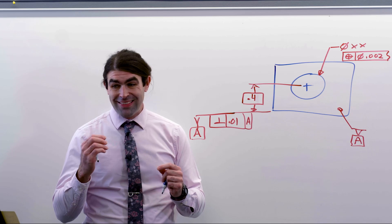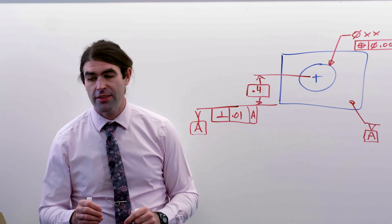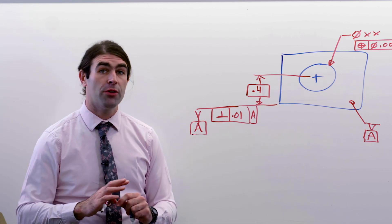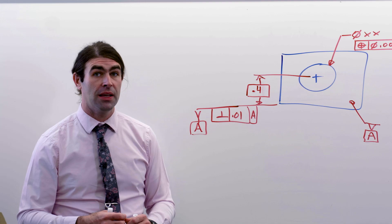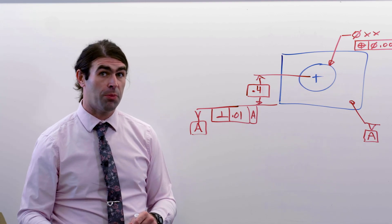In the 2009 standard, however, it says on page 38, it states that the datum feature symbol can be placed above or below and attached to the feature control frame. There's no carve out that it has to be a feature of size, specifically a datum axis or a datum center plane.